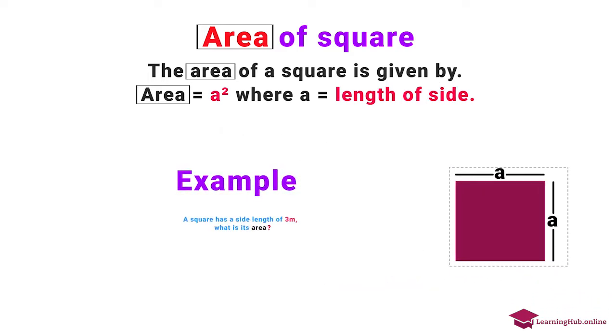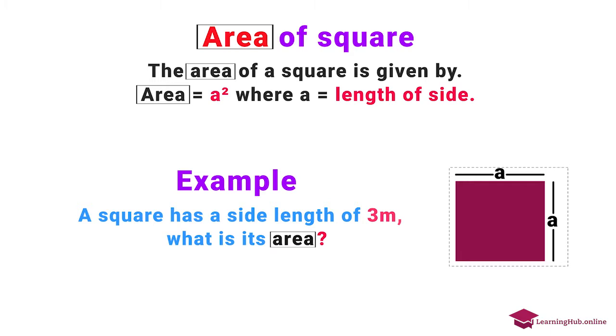Example. A square has a side length of three meters. What is its area? Area equals three meters squared equals nine meters squared.